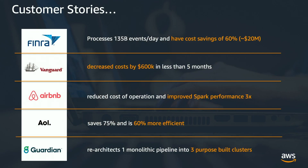We have a lot of customers who successfully migrated to Amazon EMR. For example, FINRA actually processes 135 billion events every day to look at the stock market and try to find manipulations or insider trading. They migrated to Apache HBase on Amazon EMR and also use Amazon S3 for their data lake. By doing that, they were able to reduce cost by 60%, which is equivalent to close to $20 million.